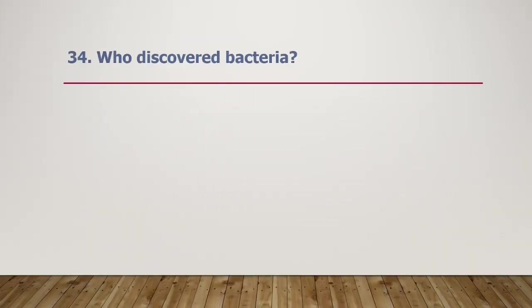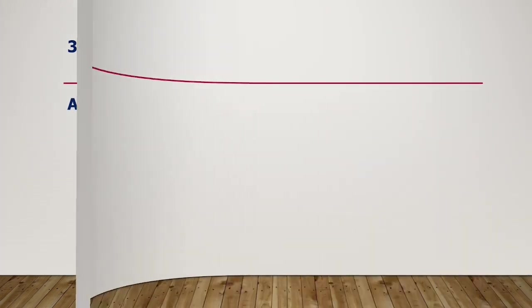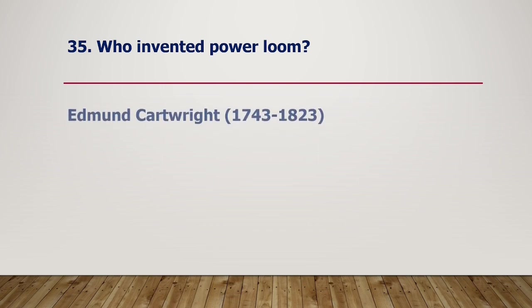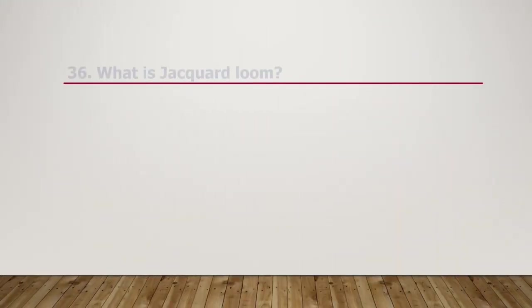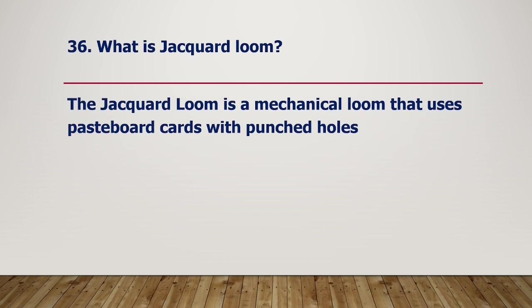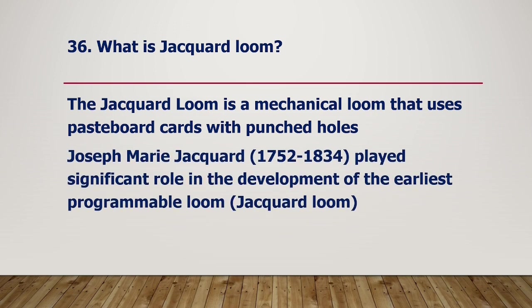Who discovered bacteria? Antonie van Leeuwenhoek. Who invented the power loom? Edmund Cartwright, 1743–1823. What is the Jacquard loom? The Jacquard loom is a mechanical loom that uses pasteboard cards with punched holes. Joseph Marie Jacquard, 1752–1834, played a significant role in the development of the earliest programmable loom, the Jacquard loom.